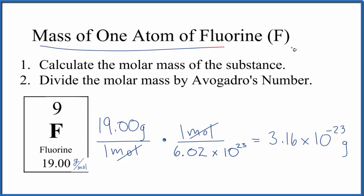So that's the mass of one atom of fluorine, and it is an average fluorine atom since we're using the average atomic mass. It's a pretty small number, but that makes sense. Atoms are very small.